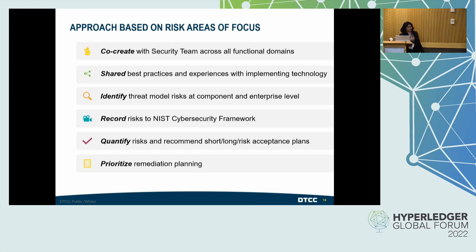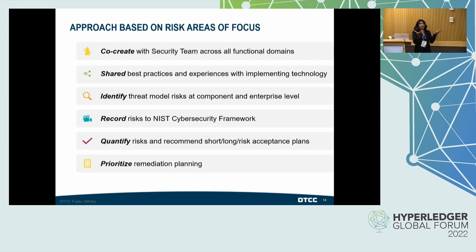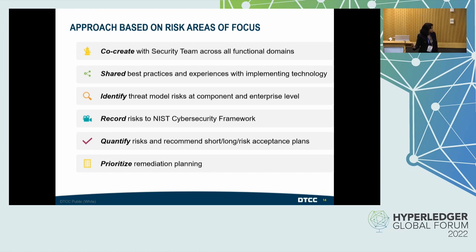Our approach, once we identified the risk areas of focus, was to co-create with the security teams — looping in all the skilled resources from different squads brings shared best practices and experience for implementing a specific technology. Once we had the squads together, we identified the threat model risks at the component and enterprise level, because eventually all of these have to roll up into an enterprise risk management framework. We record risks to the NIST Cybersecurity Framework, quantify those risks, recommend short-term and long-term risk acceptance plans, and prioritize the remediation planning.